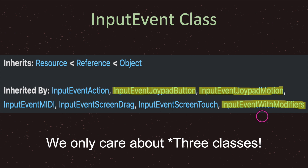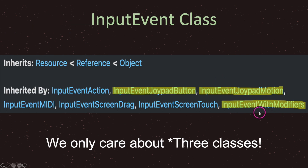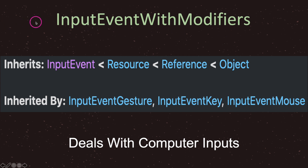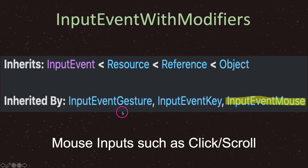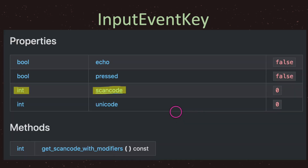As a beginner you're most likely going to work with the InputEventWithModifiers subclass, because it deals with keyboards, mouse input, and trackpads on laptops. If you click on InputEventWithModifiers in the API, you'll see it inherits from InputEvent and has three subclasses: InputEventGesture, InputEventKey, and InputEventMouse. InputEventGesture covers trackpad gestures, InputEventMouse covers mouse input such as clicking and scrolling, and InputEventKey covers keyboard button presses. In this episode we're only going to focus on InputEventKey.